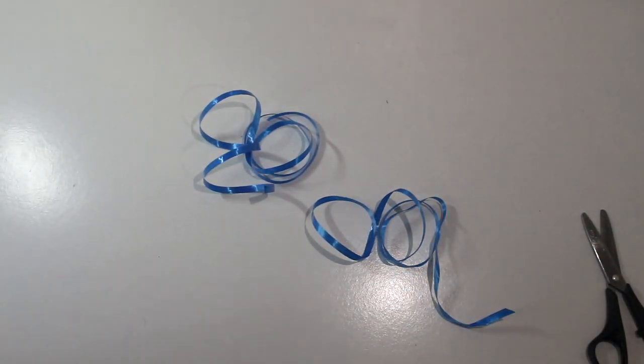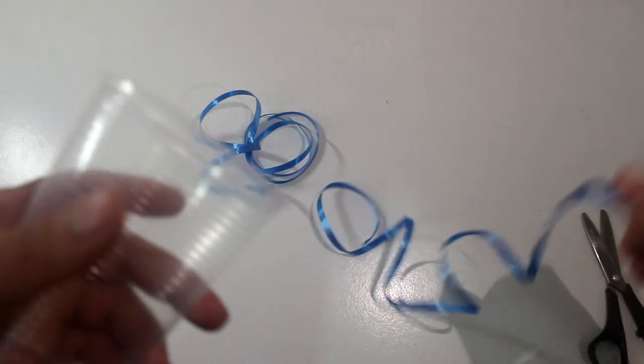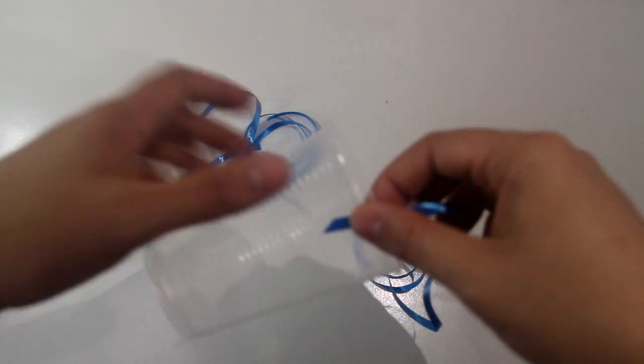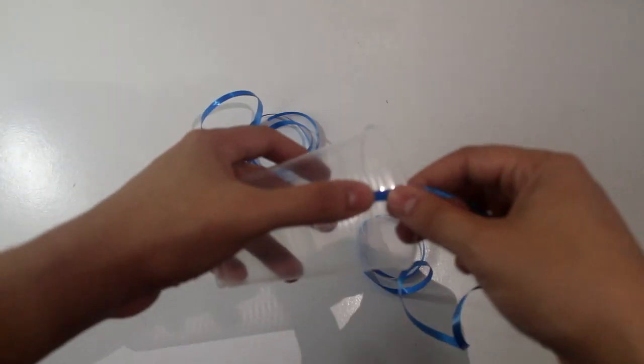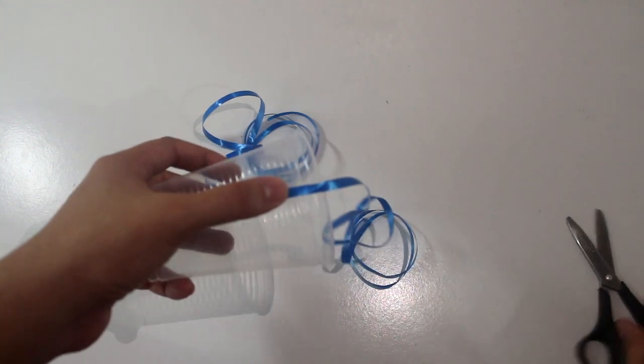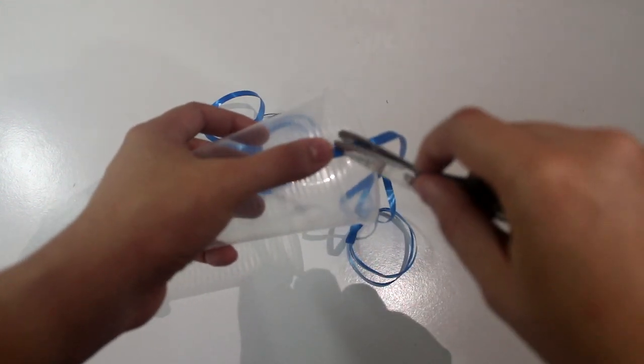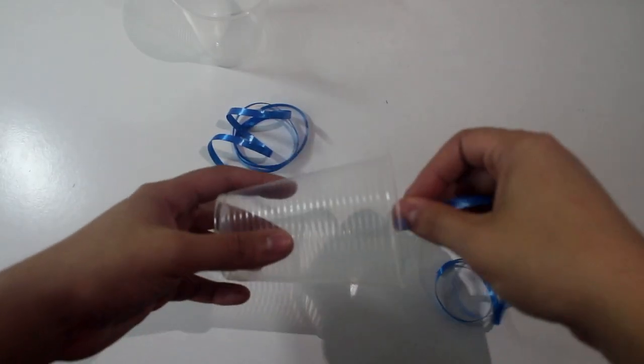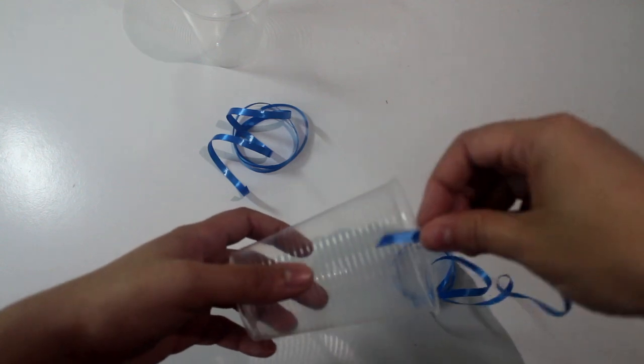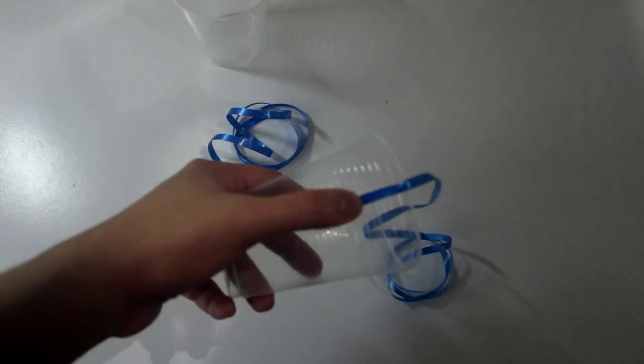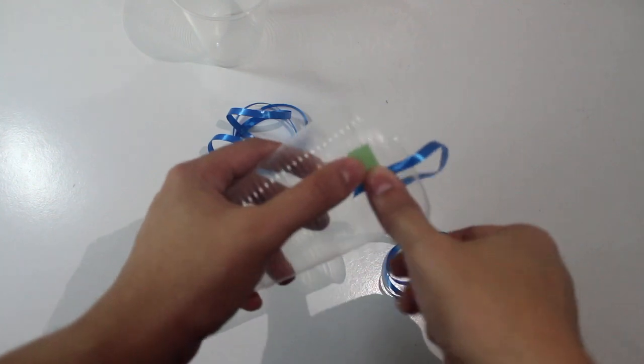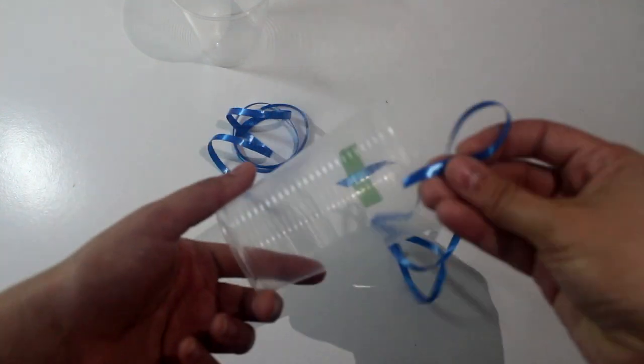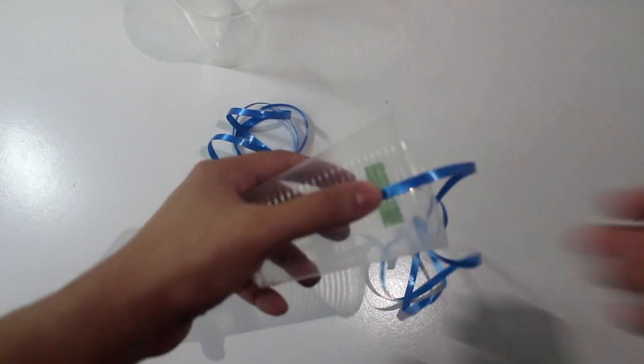Now, you are going to put these strings on the cup, ok? Ms. Raimi is going to use some tape. But if you don't have tape, you can ask your mom or your dad to make a hole in the cup and tie it down. Ok? I am going to get this string. Oh my goodness. The tape. Same thing on the other side.